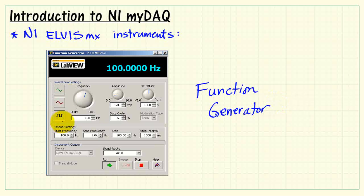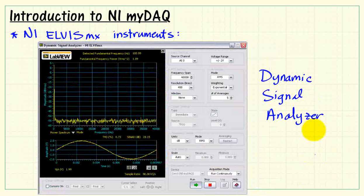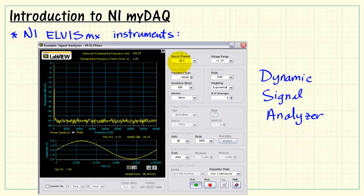The function generator produces these standard shapes. You can set the frequency, amplitude, and offset. The Bode analyzer can be used to plot the frequency response of a circuit or filter. You can see the gain and phase response. The dynamic signal analyzer shows you the real-time frequency content of a signal that you apply to the inputs.